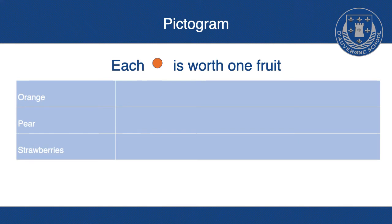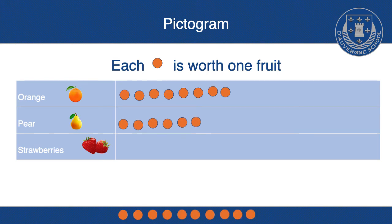We've got a horizontal table, which means it goes across rather than up, which would be vertical. Looking at the oranges, I know there are eight, so I've used eight circles or counters, and I've done the same with pears and strawberries.